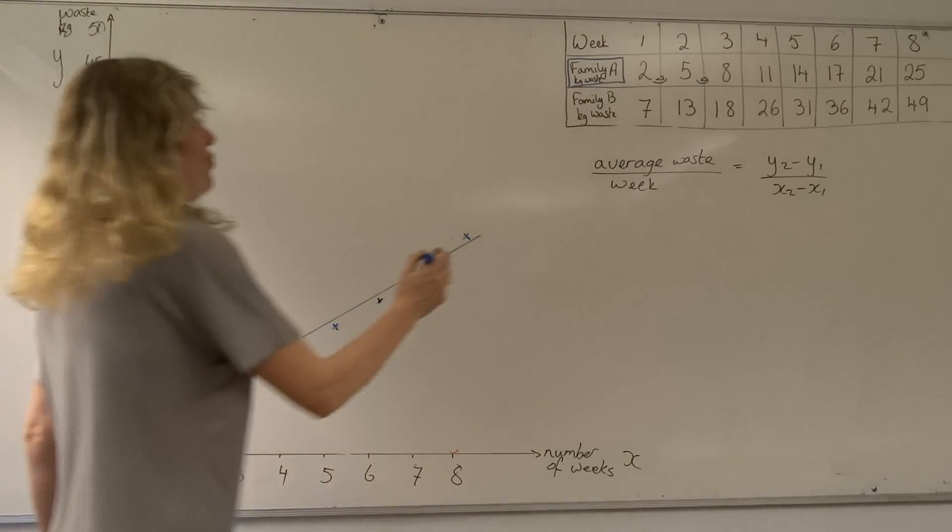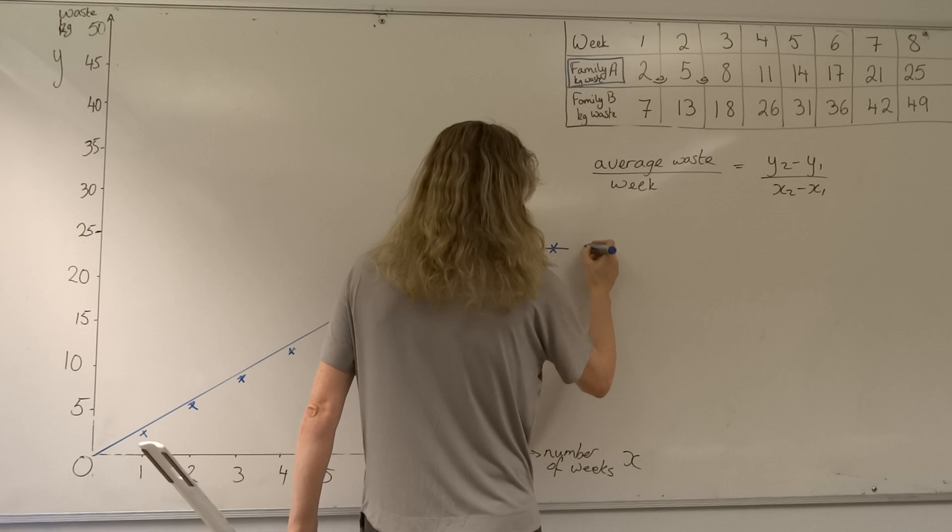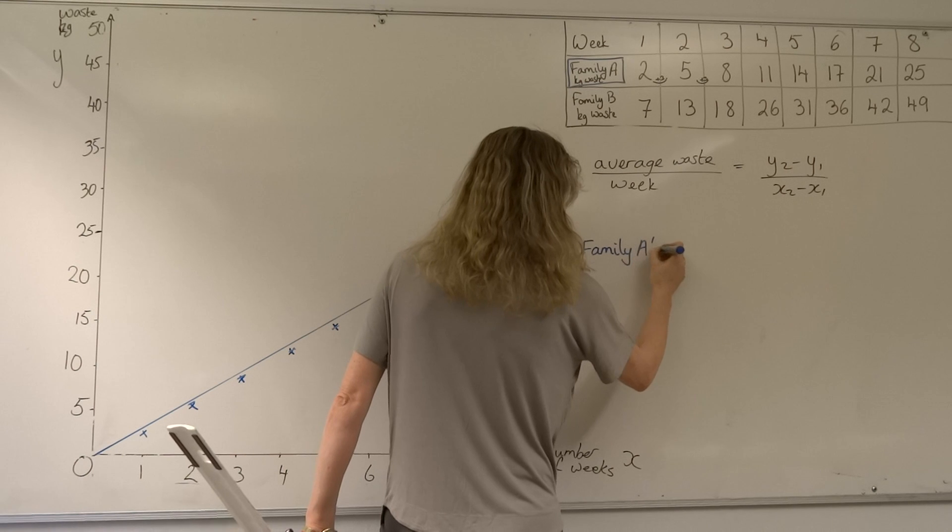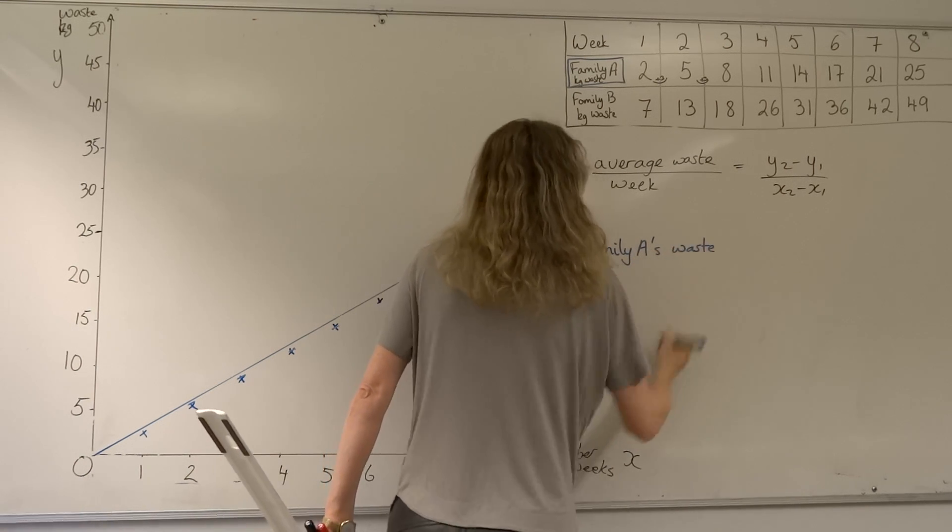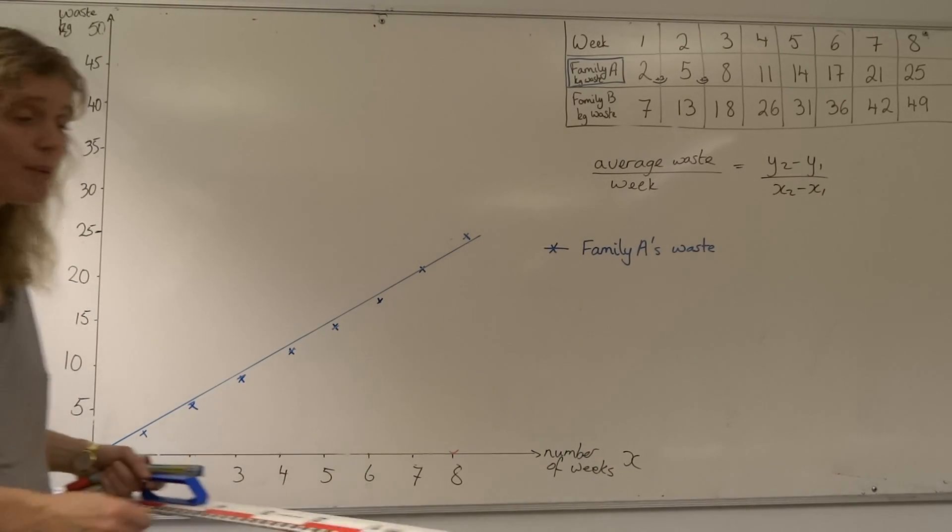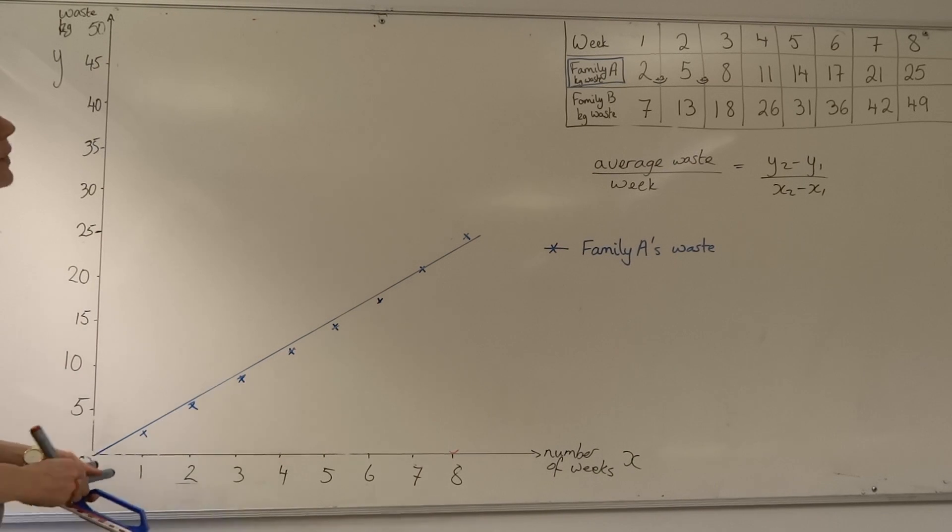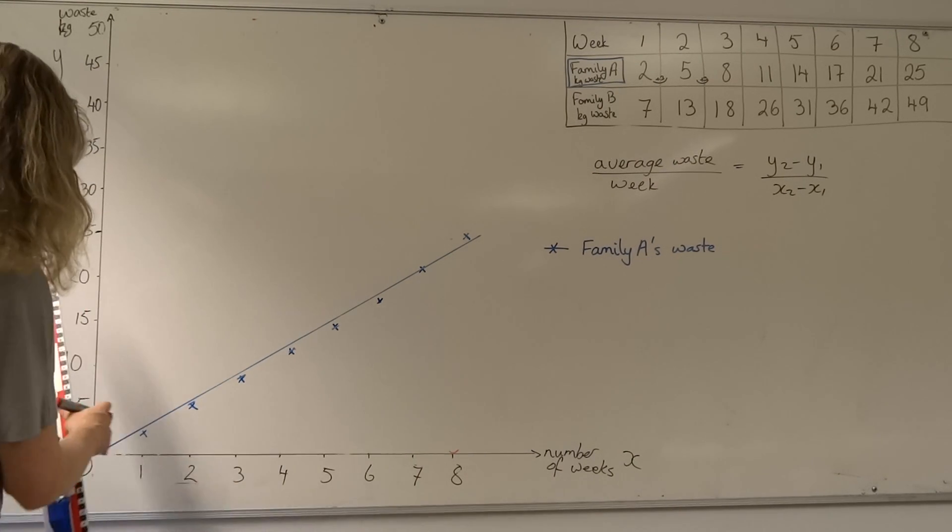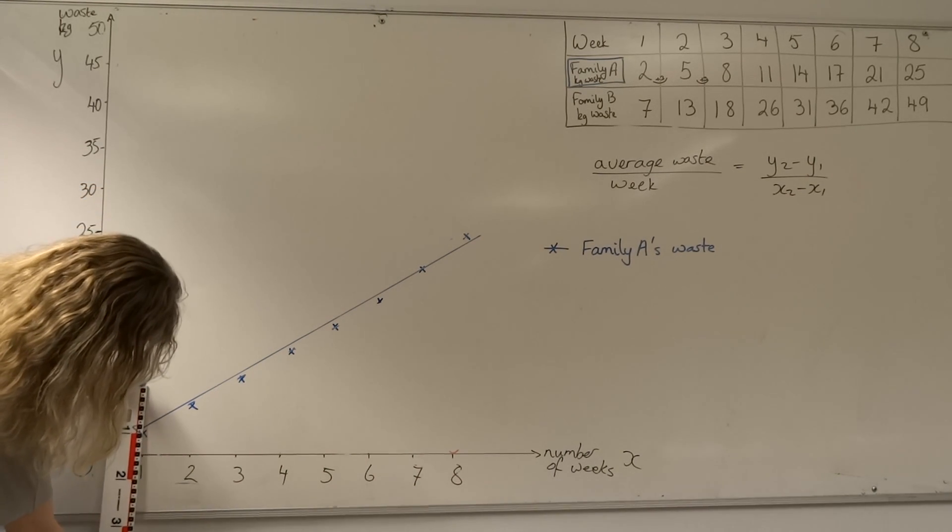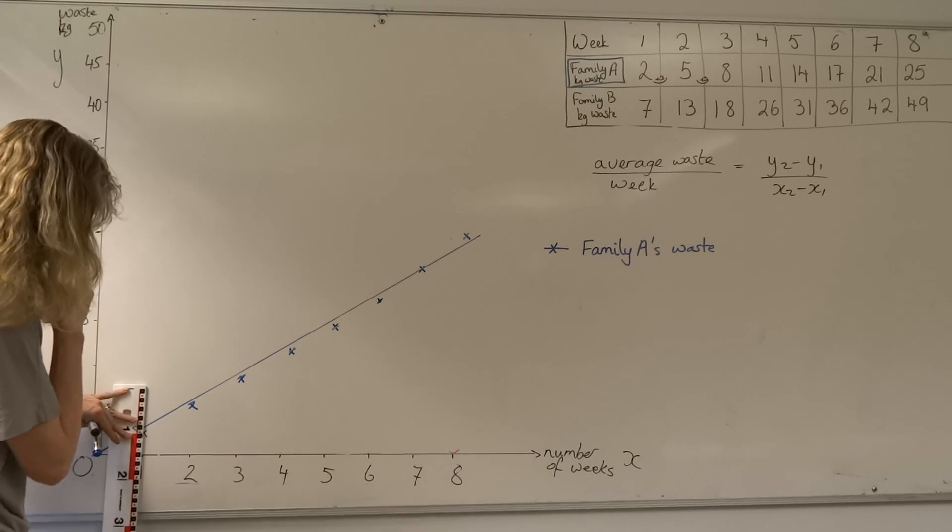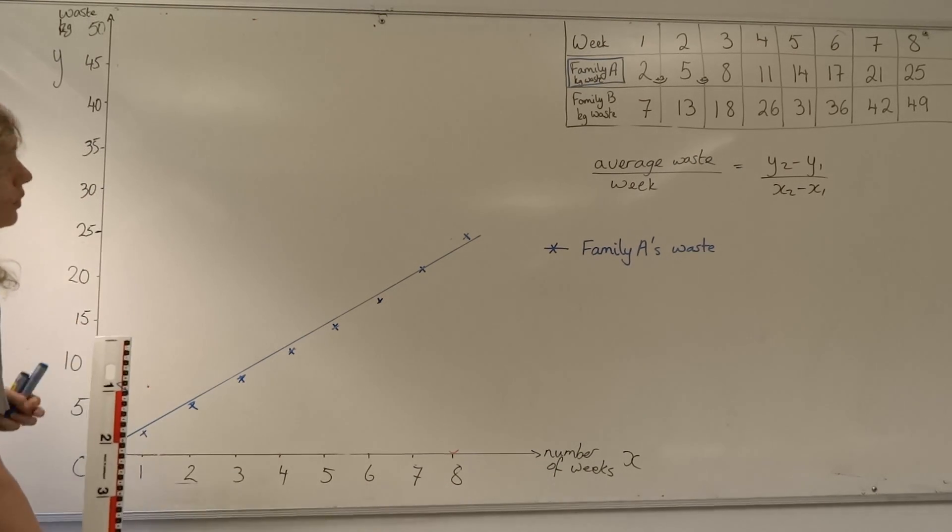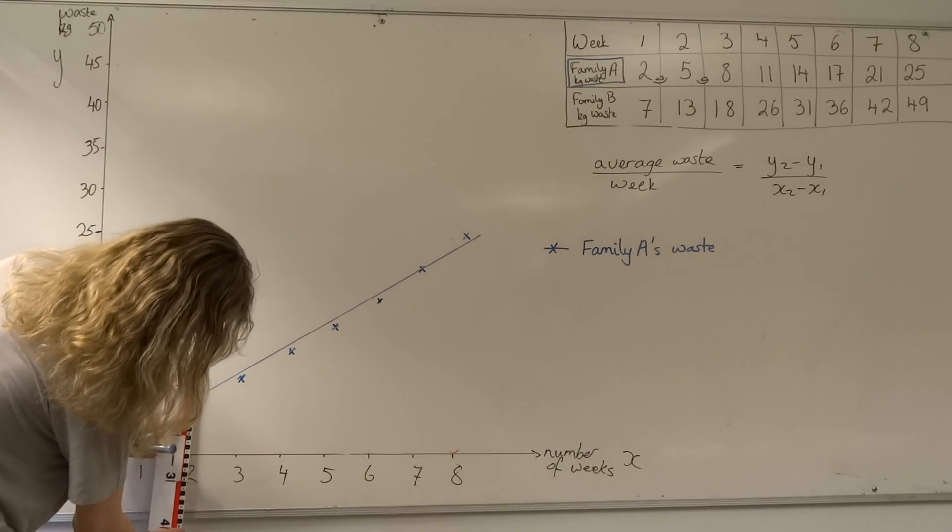We now have to write what does the blue line mean. Well, the blue line means family A's waste. So we're telling everyone what the blue line represents. Now we're going to do the same thing but plot for family B, where we start with week one they had seven kilos, which will be equivalent to 14 centimeters. At week two, 13 kilos equivalent to 26 centimeters.